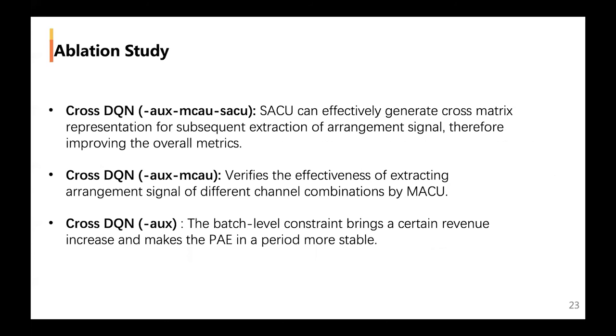To verify the impact of different designs, we study three ablated variants of Cross-DQN in which we remove different components. The results shown in Table 2: we find by implementing crossing the embedding of the states and actions, SSU can effectively generate cross-match in prediction of user actions, therefore improving the overall metrics. The MSU is an additional process after the cluster over the strength of the matter of integration. The batch-level constraint brings a certain revenue increase and makes the PAE more stable.